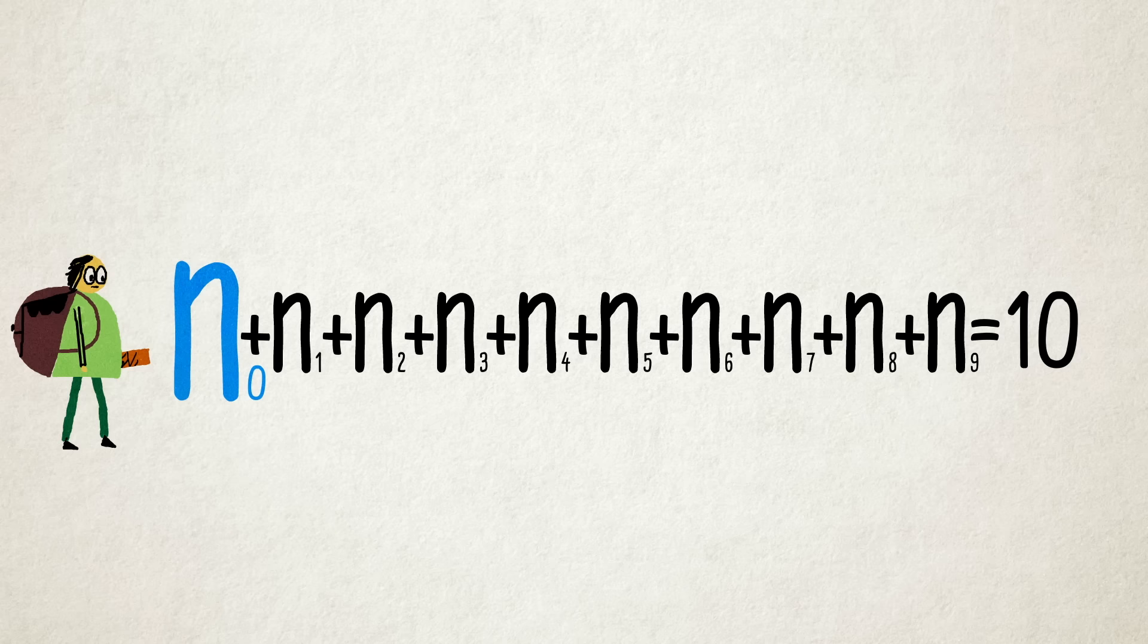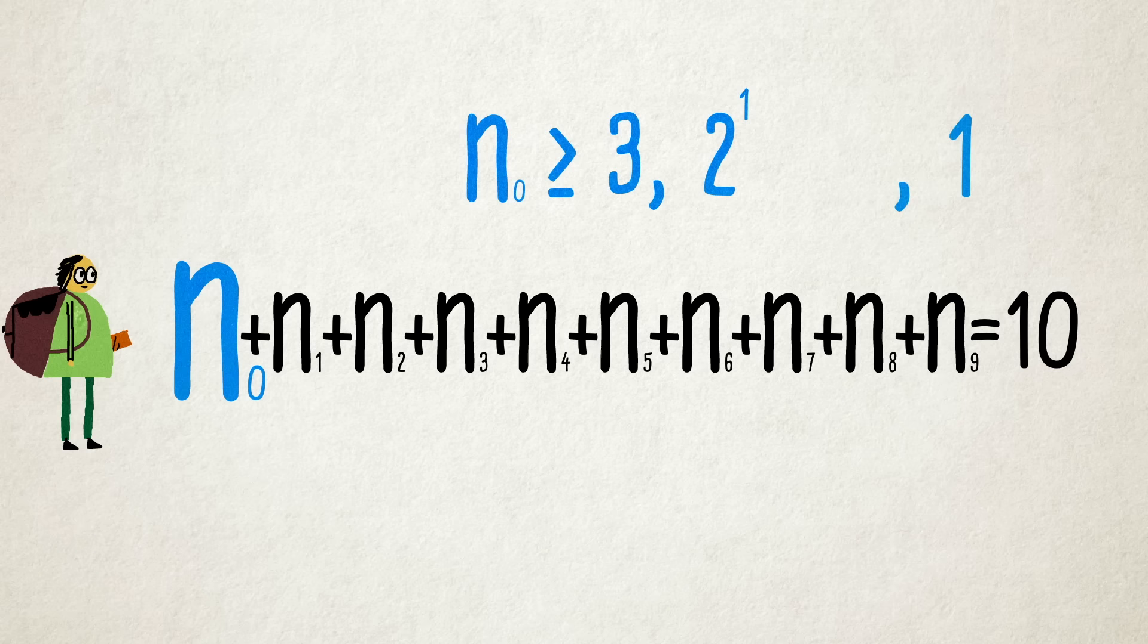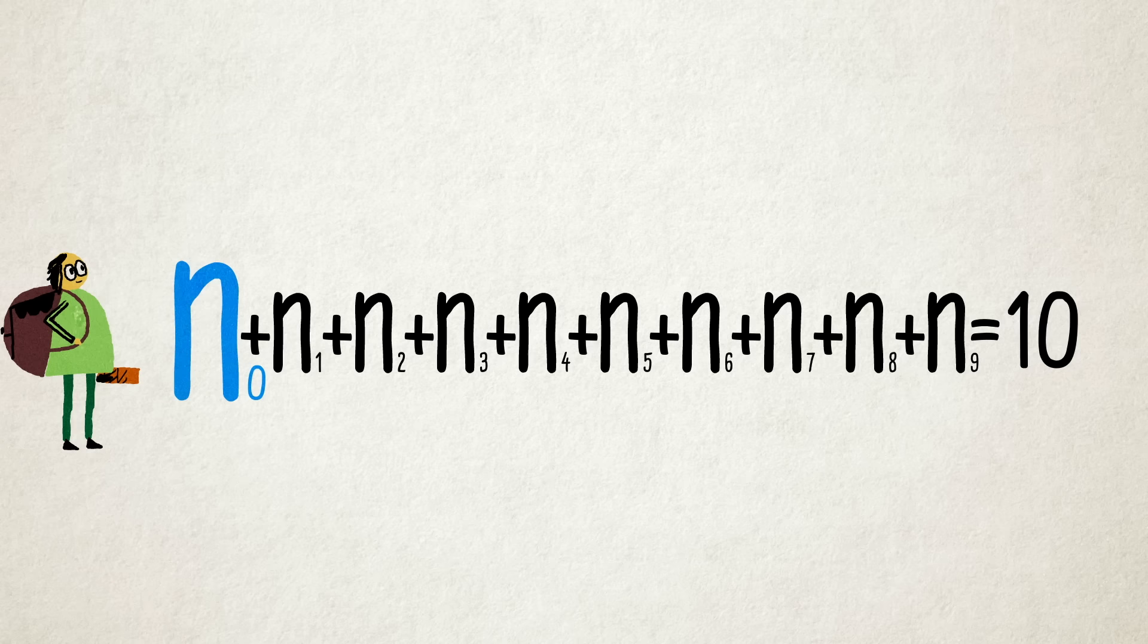So now we have the leading digit of 3 or greater counting the zeros, a 2 counting the ones, and two ones, one to count the twos, and another to count the leading digit. And speaking of that, it's time to find out what the leading digit is.